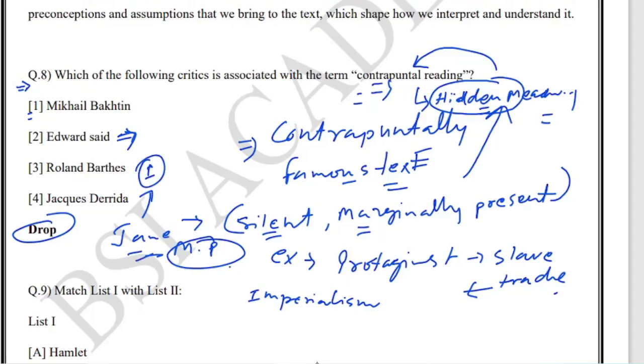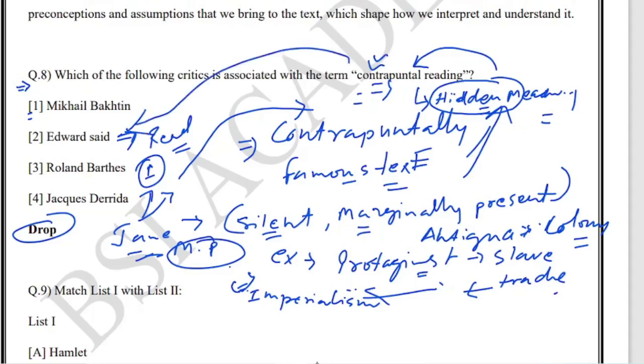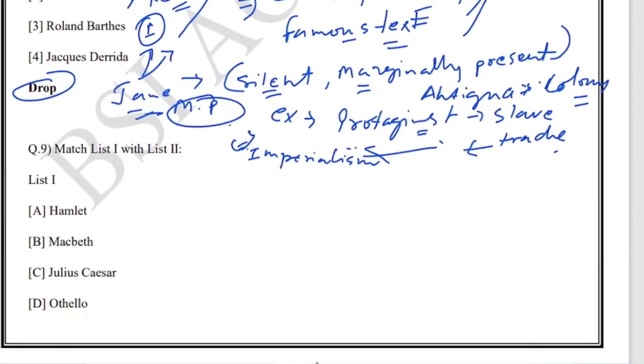He gives examples from Pride and Prejudice and Jane Austen's Mansfield Park. In Mansfield Park, the protagonist's benefactor owns a plantation in Antigua and profits from imperial slave trade. Reading contrapuntally, you can talk about imperialism. Antigua was a colony of the British, so we can discuss colonialism as well. There are many ideas we can explore when reading contrapuntally.